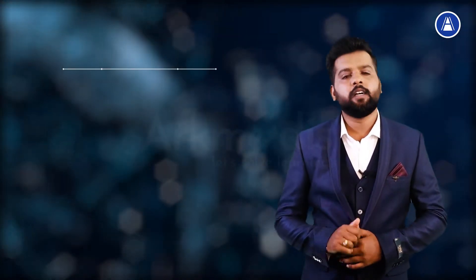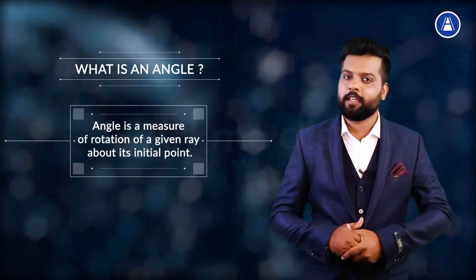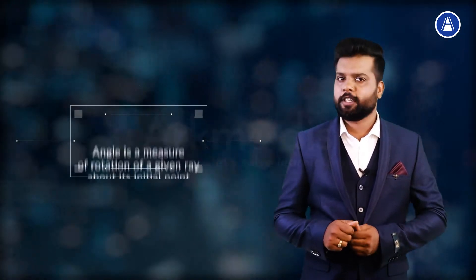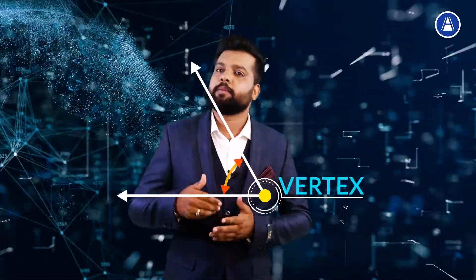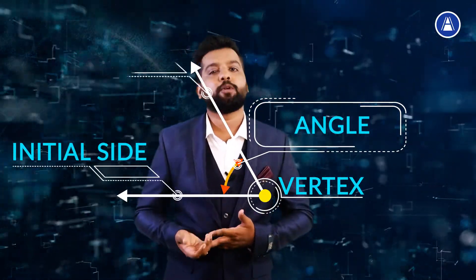So what is an angle? Angle is a measure of rotation of a given ray about its initial point. Look at this: this is a ray and this is a fixed point. I am moving this ray with respect to the fixed point which is called the vertex. The measure of rotation is called an angle. The original ray is the initial side and the final position of the ray is called the terminal side of the angle.